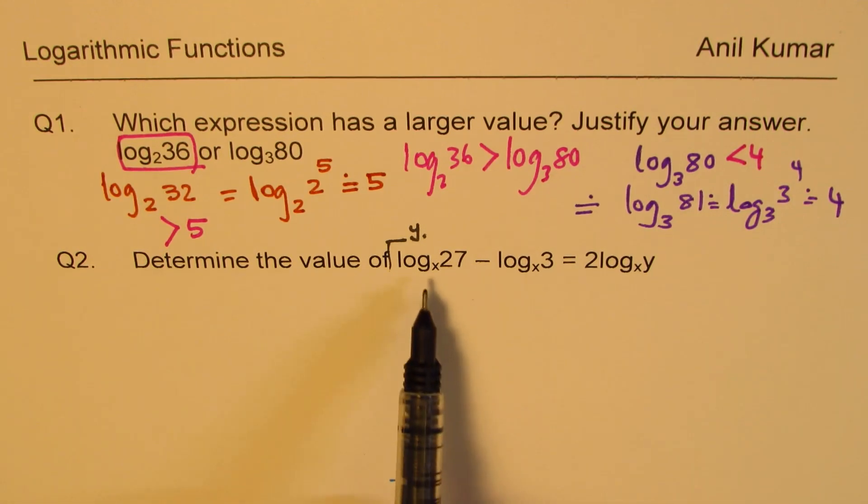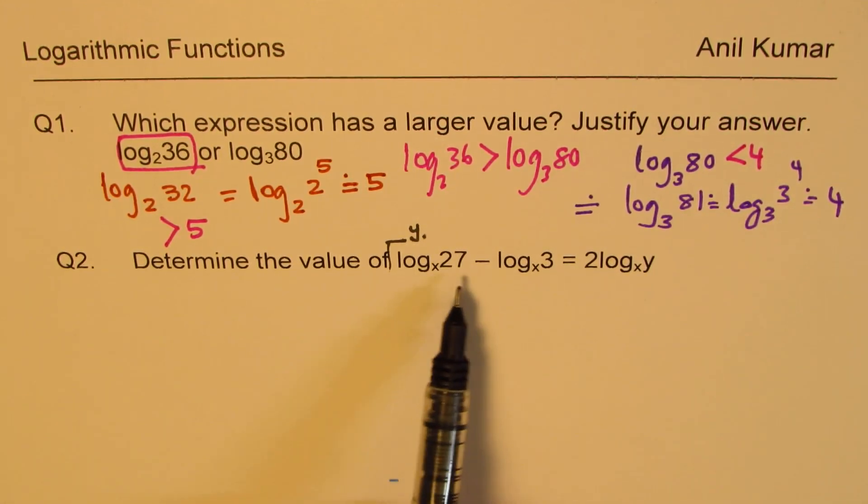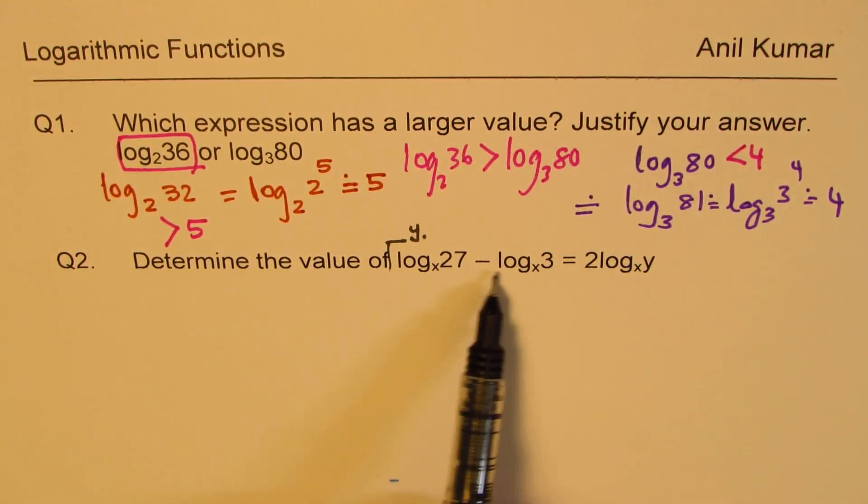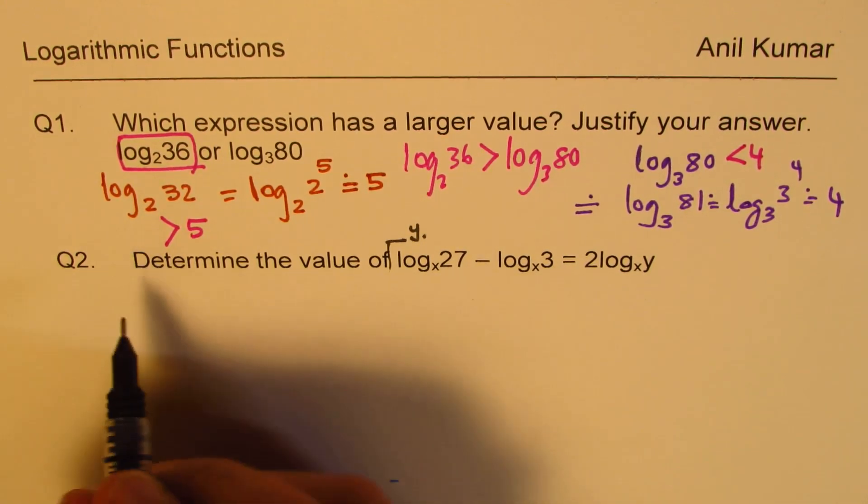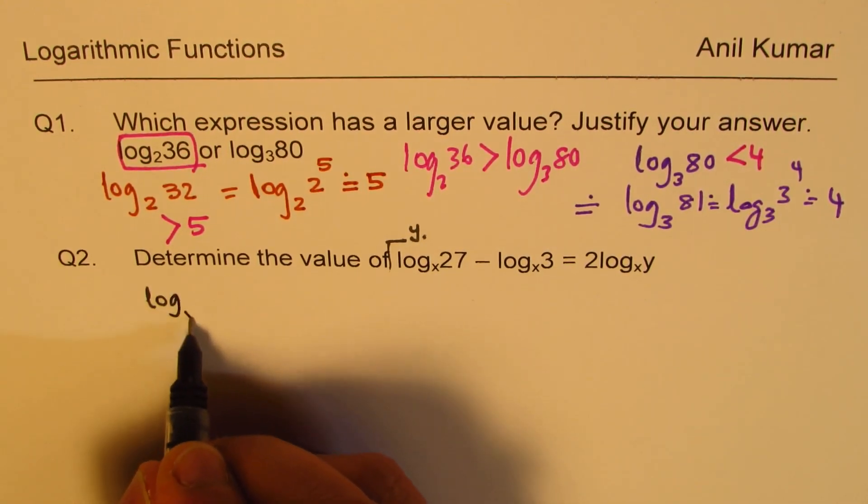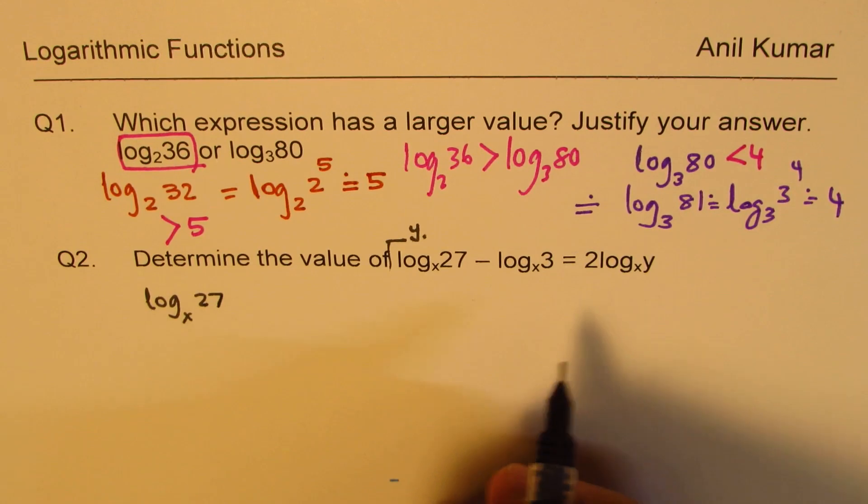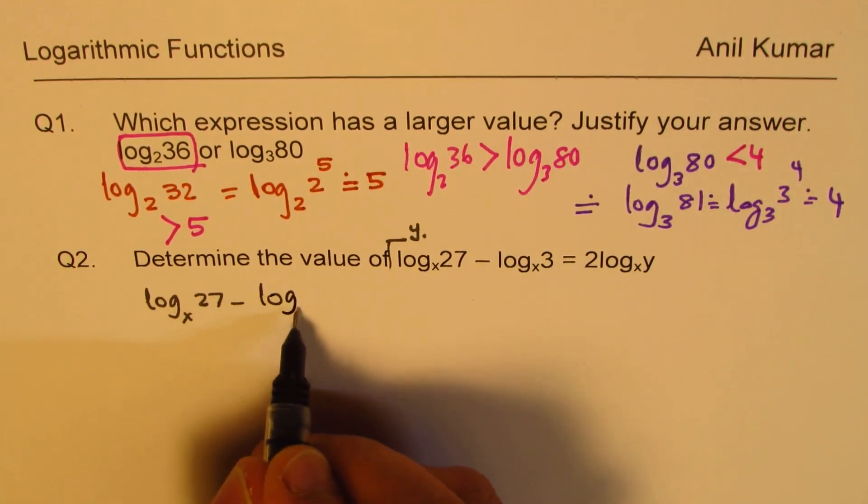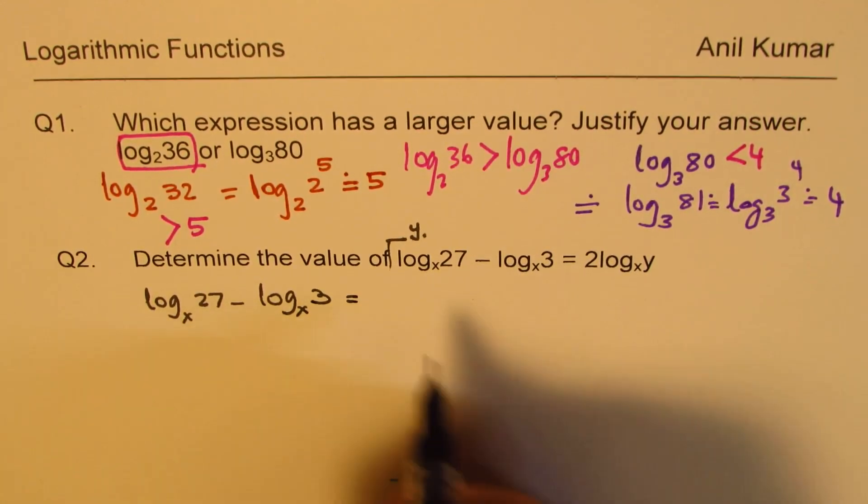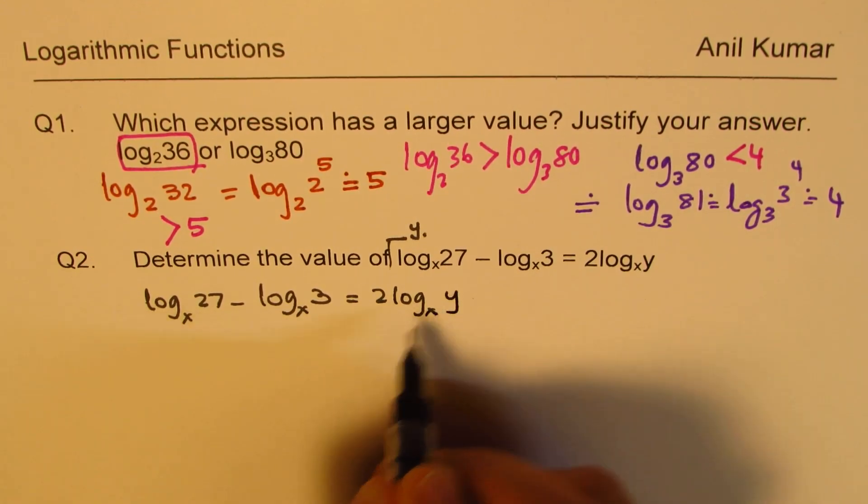Now, the second question is a logarithmic equation. What you need to remember is the laws of logarithms. When it is negative, then you could divide. So we have log to the base x of 27 minus log to the base x of 3 equals 2 times log to the base x of y.